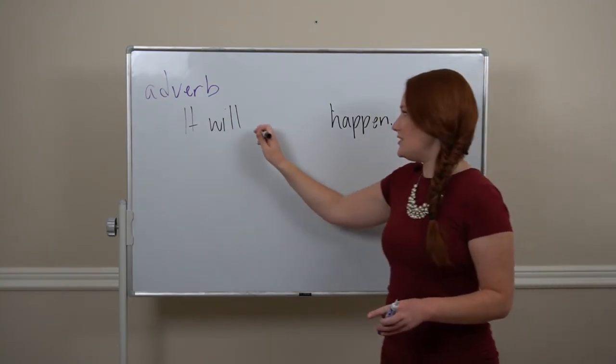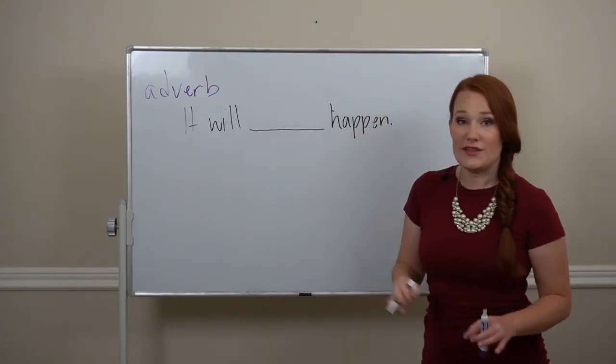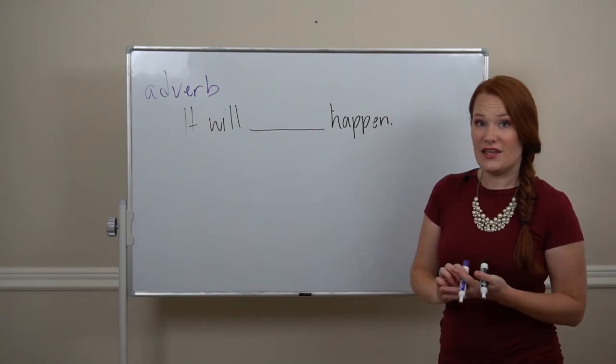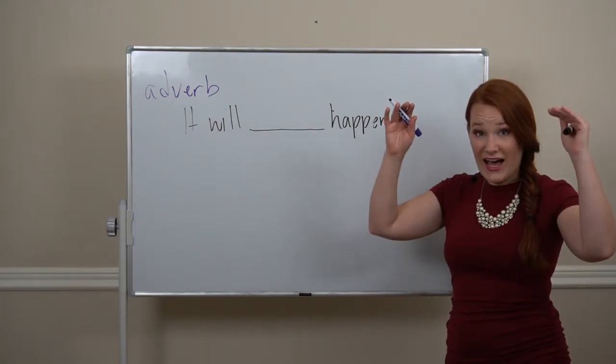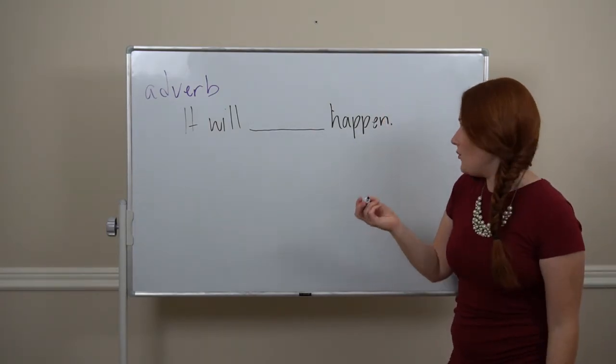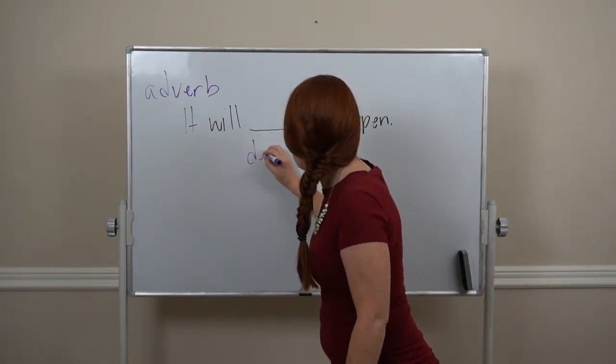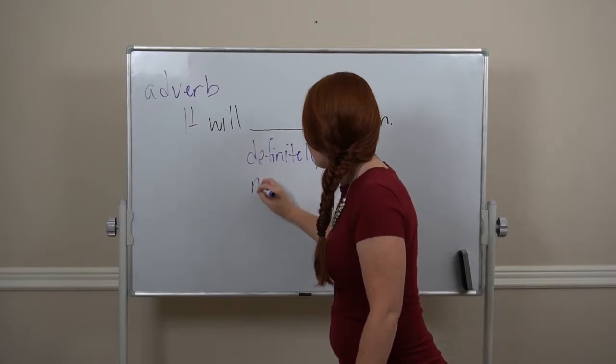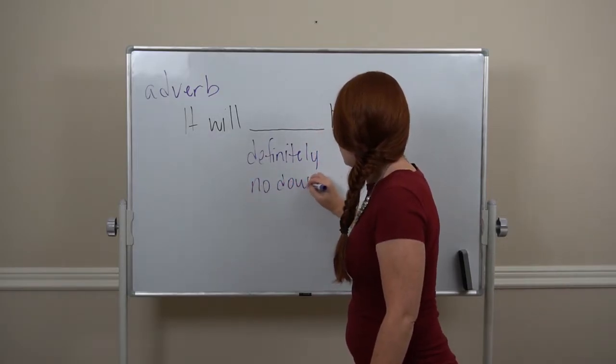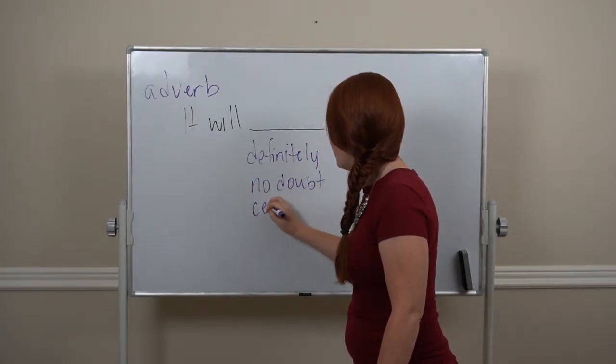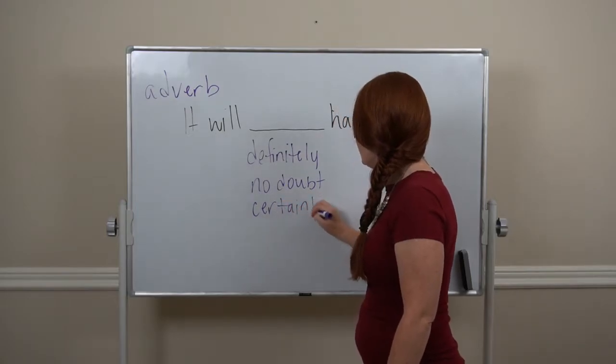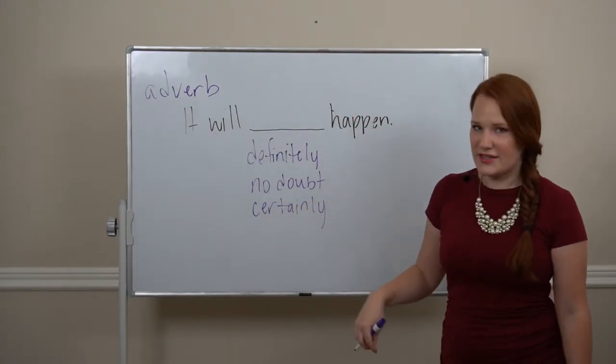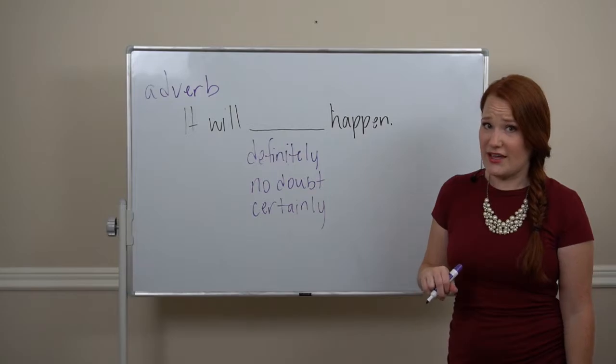We'll put an adverb between these two to express how likely it is. So at the top, 100% likely, we've got words like definitely, no doubt, and certainly. These are all like 100% sure. It'll definitely happen.